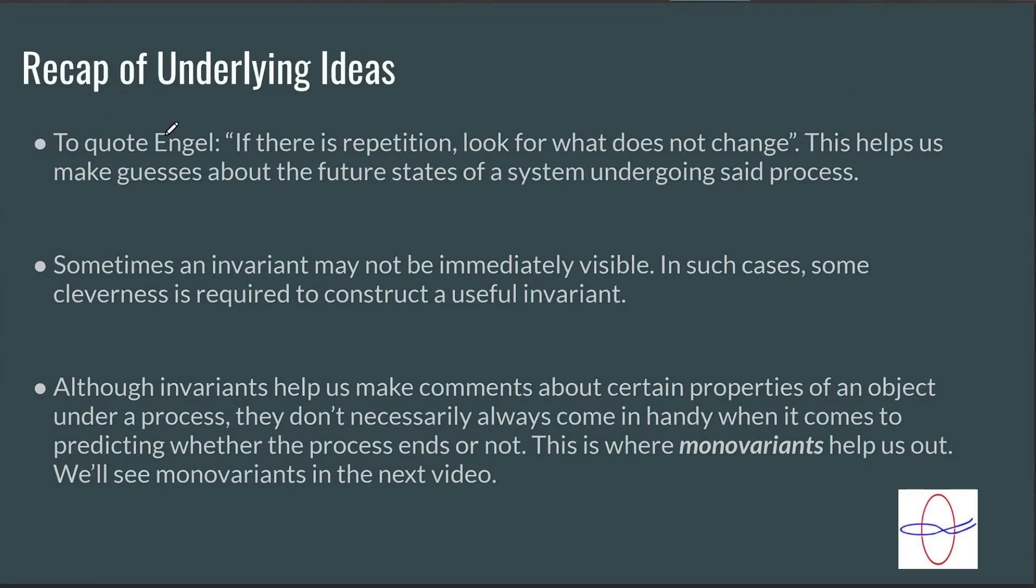To quote Engel, this is directly from Engel, if there is repetition, look for what does not change. This helps us make guesses about the future states of a system undergoing said process, which is what we did here. We constructed an invariant which stayed the same, and hence we could make predictions about all the future states, not just one. We know that all the sectors cannot have the same value simply because the invariant will not allow it.